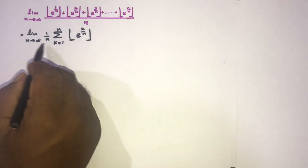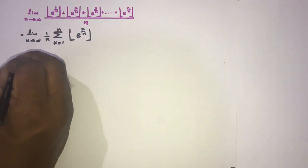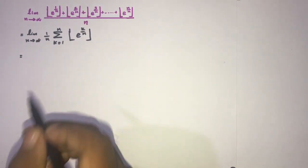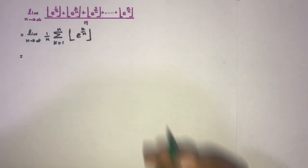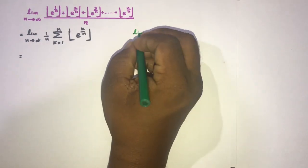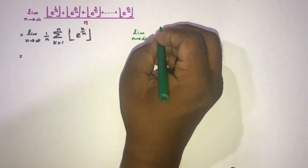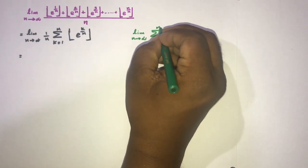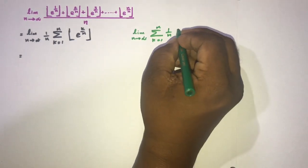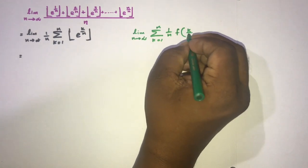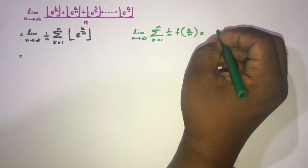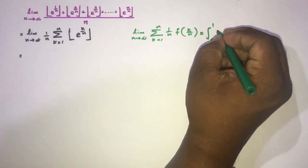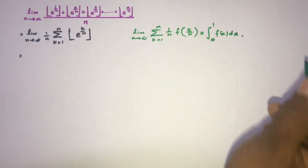Here we have an infinite series. Now, we can represent the infinite series as a definite integral. So we know this formula: limit n approaches to infinity sum of k equals 1 to n, 1 over n times f of k over n, is equal to definite integral 0 to 1 f of x dx.